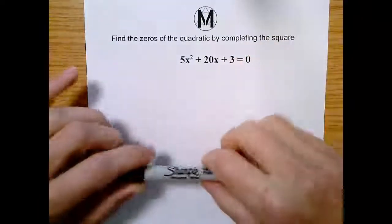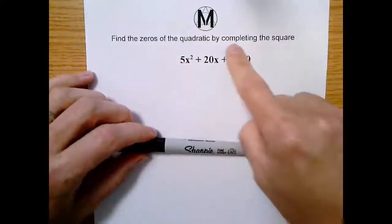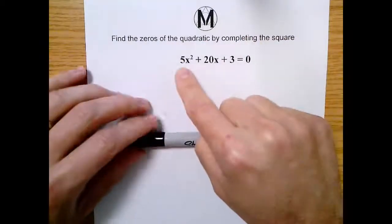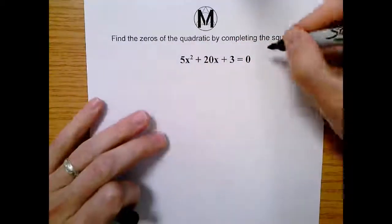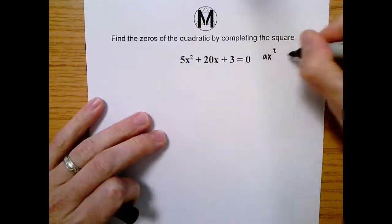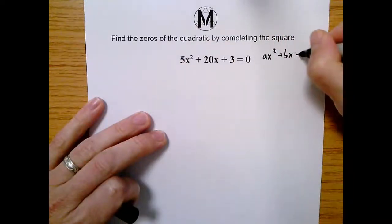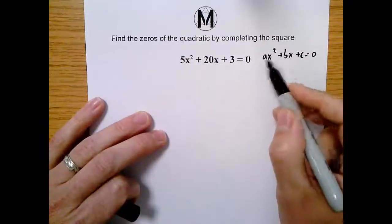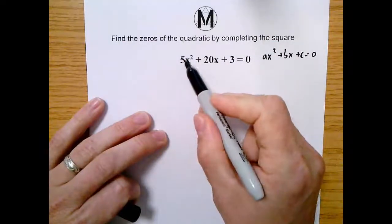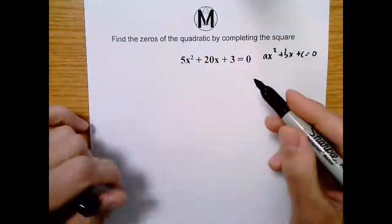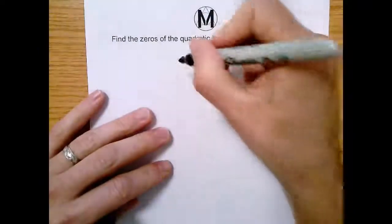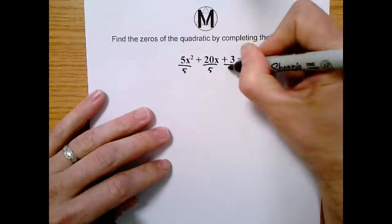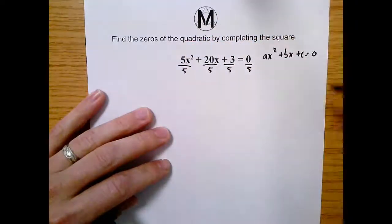But there's one thing we got to be super careful about. Whenever we are tasked with completing the square, we only do this if our a value - in standard form ax squared plus bx plus c equals zero - we only do completing the square if our a value is one. We can see here our a value is five. Not to worry, we can handle this. We just have to divide out the five.